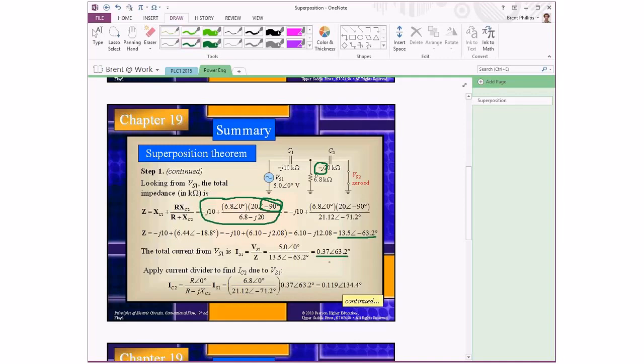If you've got a complex number calculator, it'll do this calculation directly as you type in those numbers. Otherwise, if you're doing it manually, you do it in two different stages. 5 divided by 13.5 gives you the magnitude, 0.37, and then separately do the angles, 0 minus negative 63.2. So minus a negative number means we end up with a positive angle for the current.